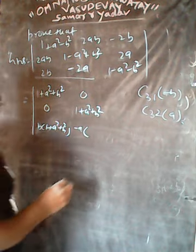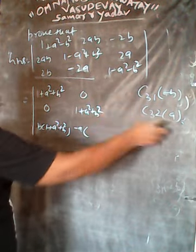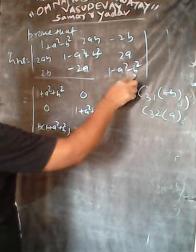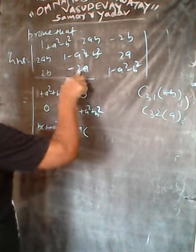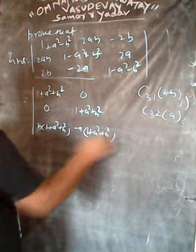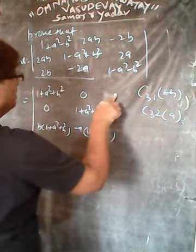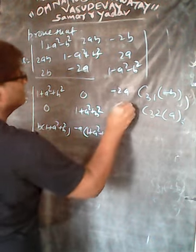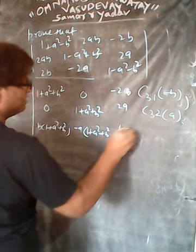And we get: a multiplied gives a cube plus a square plus b square; then minus 2ab plus a square plus b square, then a b square — so that will be minus a times 1 plus a square plus b square. Then the next entry is minus 2a and 1 minus a square.